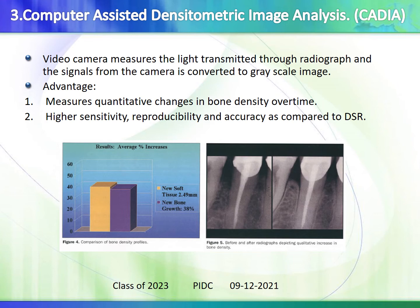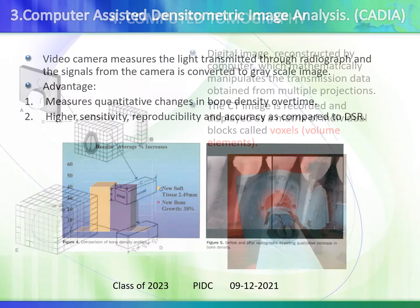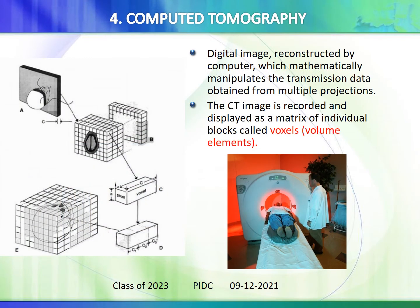CADIA (computer-assisted densitometric image analysis) uses a video camera to measure light transmitted through the radiograph; signals are converted into grayscale. The advantage is quantitative measurement of bone density changes over time with higher sensitivity, reproducibility, and accuracy compared to DSR. Computed tomography (CT) produces digital images reconstructed by computer from multiple projections; the CT image is recorded and displayed as a matrix of individual blocks called voxels (volume elements).